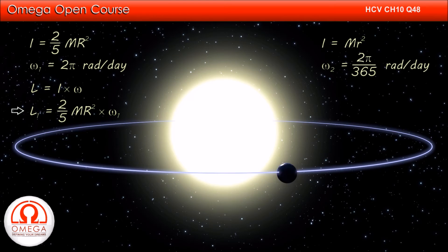Therefore, its angular speed for revolution is 2π/365 radians per day. The angular momentum of the Earth about the Sun is mR'² times ω₂.